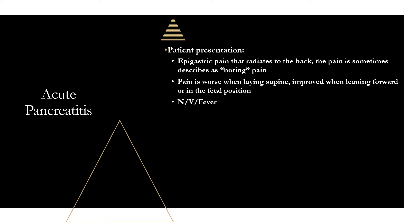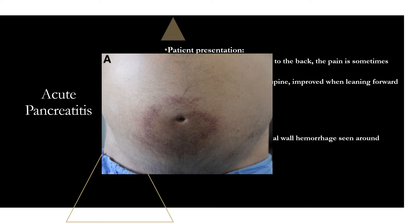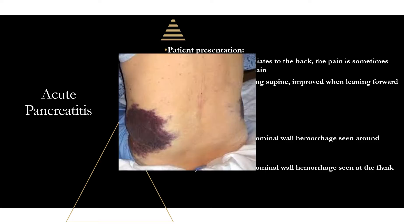On physical exam, there are a couple of key terms the boards like to use. There's Cullen's sign and Grey-Turner sign. Both are signs of abdominal wall hemorrhage. Cullen's sign shows ecchymosis around the umbilicus. Grey-Turner sign is the same — ecchymosis — but located at the flank. Neither sign requires acute pancreatitis specifically; for example, Cullen's sign was first observed in a ruptured ectopic pregnancy. But for boards, think acute pancreatitis when you see either.